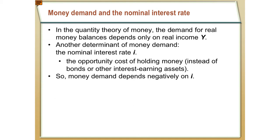So if the nominal interest rate is high, you're foregoing a lot of interest income if you hold lots of money. The higher the nominal interest rate, the less money you want to hold. The lower the nominal interest rate, the more money you want to hold, all else equal. So there is a negative relationship between money demand and the nominal interest rate: I goes up, money demand goes down.